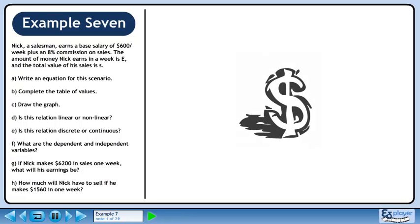Nick, a salesman, earns a base salary of $600 per week plus an 8% commission on sales. The amount of money Nick earns in a week is E and the total value of his sales is S.